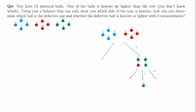What happens if the scale tips to the right? In this case, we know that either green one or green two is heavy, or green three is light. To get the answer, we can just measure green ball one and two against each other. If they're equal, then we know green three is light. If the right side is heavier, then we know green one is heavy. If the left side is heavier, then green two is heavy. By the way, for the case of green four being defective, we don't know if four is light or heavy yet, so we can just balance it against ball one or three to see whether four is heavy or light, since we know all other balls are non-defective.